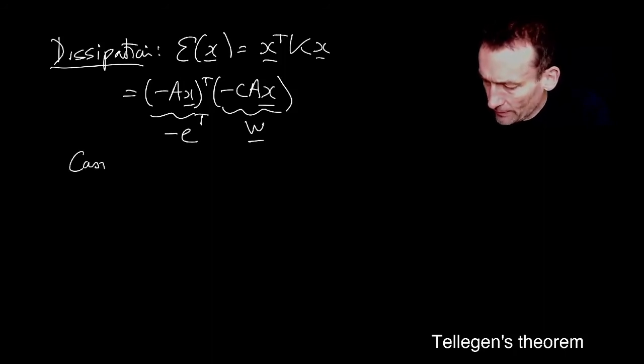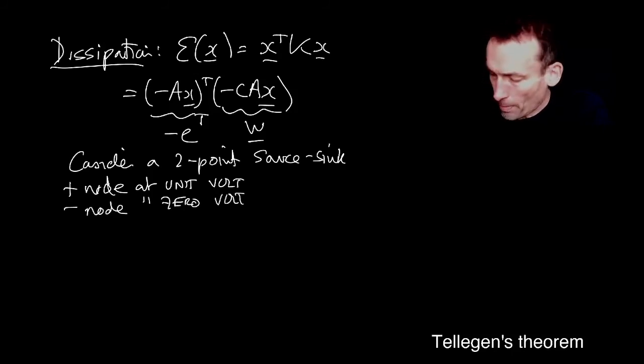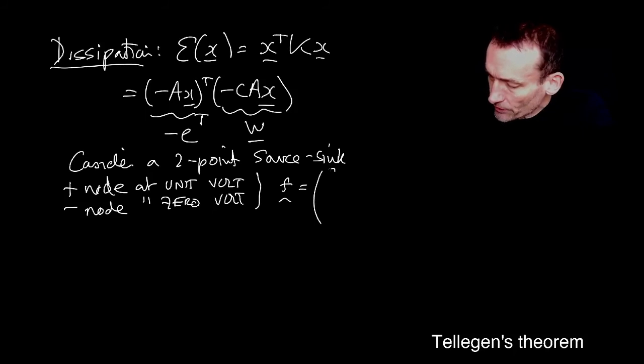Now, consider a two point source sink current. So I've got a plus or minus node, plus node at unit voltage, and then minus node at zero voltage. Then the F, and I'm not going to tell you what size the graph is, but we just know, let's put these plus minus nodes in the first position. Then the F associated by that would be CF minus CF. And then the rest of zeros for all the other KCL nodes.